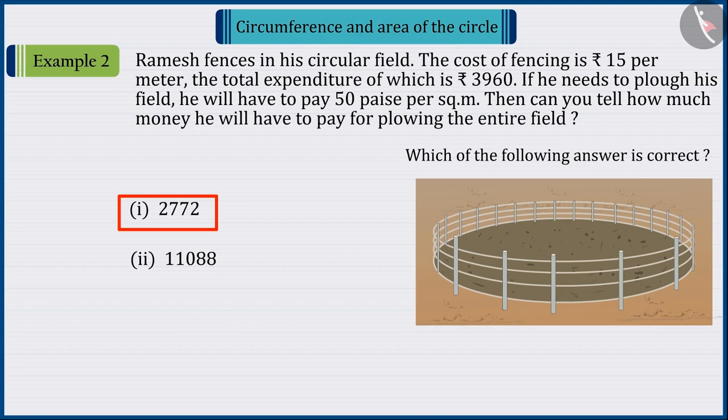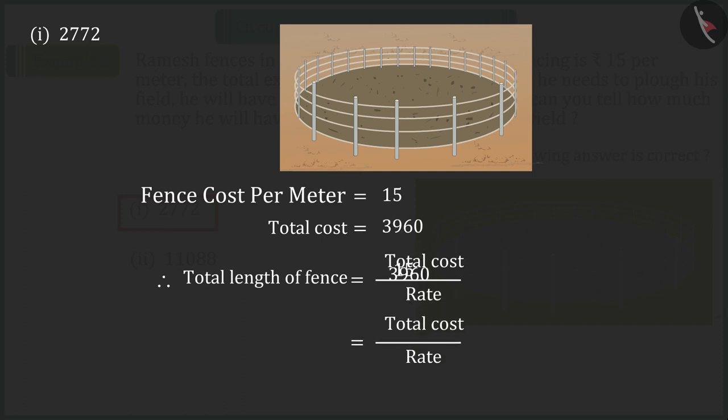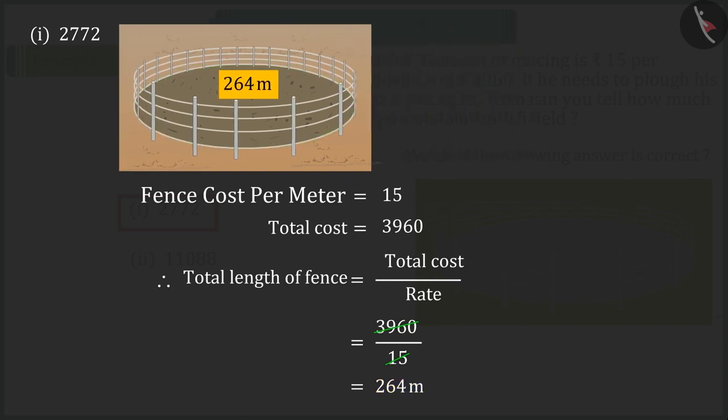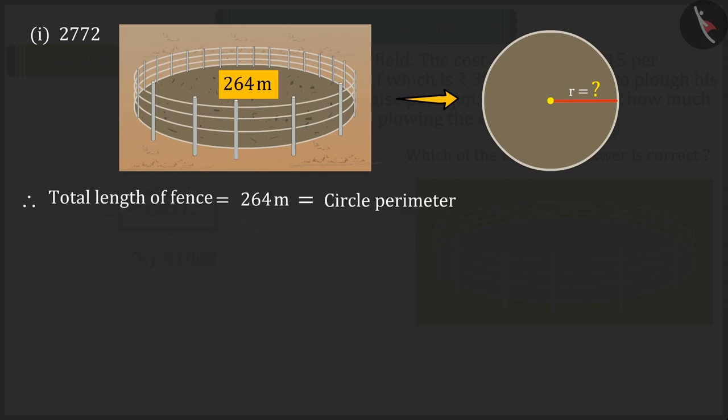Come, let's discuss option 1. It is given that the total cost of the fence at the rate of 15 rupees per meter would be 3,960 rupees. This means that the total length of the fence is 264 meters. So, now, can you find the radius of a circular field? Absolutely correct! To find the radius, we will take the help of the formula of circumference of the circle.